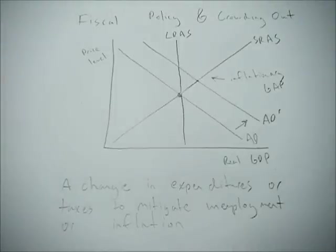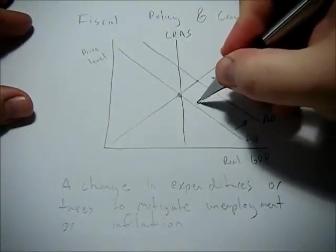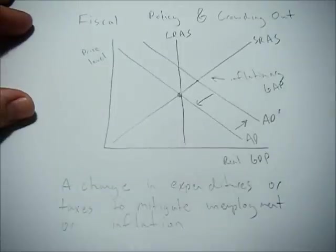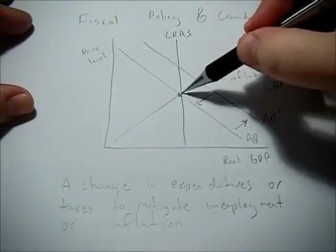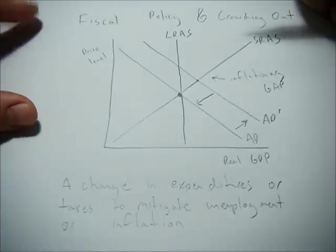But prices will rise. So what the government can do is raise taxes or lower expenditures. And that will shift the aggregate demand curve left, and hopefully get us back to long run equilibrium without experiencing inflation.